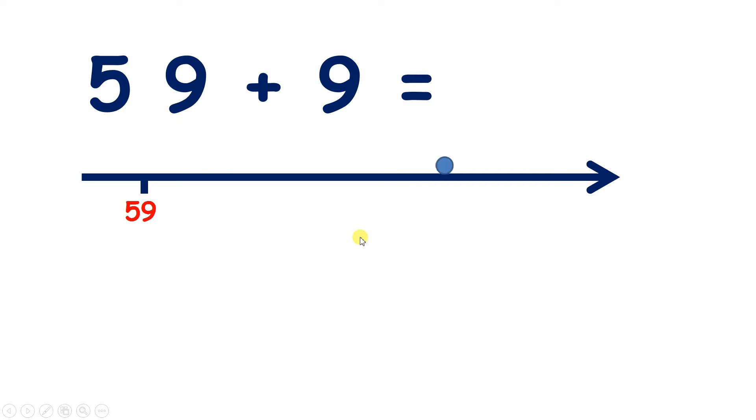So we can add 10 to get 69 and then subtract 1 to get 68. So 59 add 9 is 68.